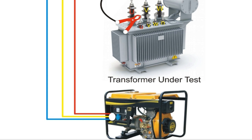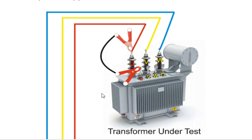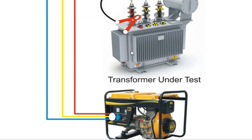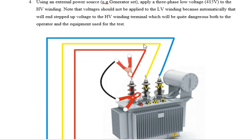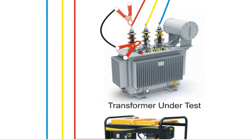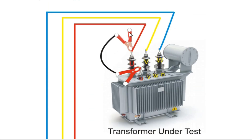The red phase output of the generator is connected to the red phase of the transformer, the yellow to the yellow, and the blue to the blue. Note that this connection goes to the high-voltage terminal of the transformer. Nothing is connected to the low-voltage terminal, because connecting the supply to the high-voltage side means the transformer steps the voltage down.